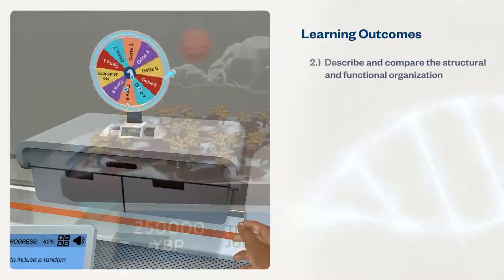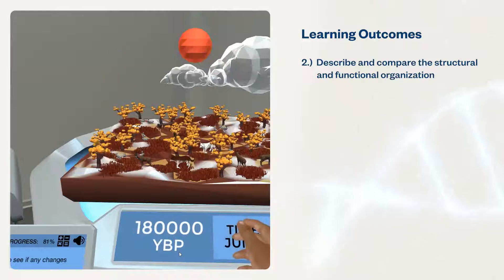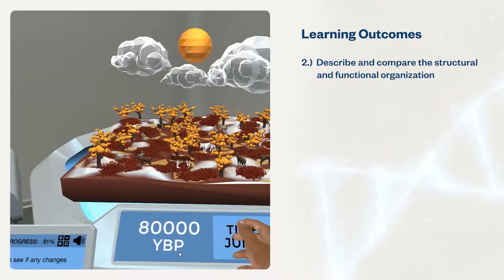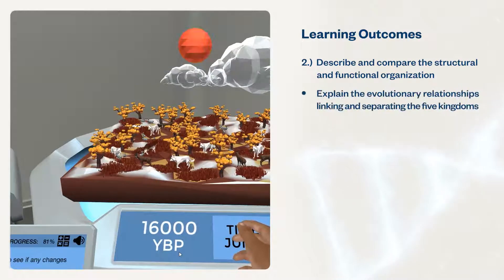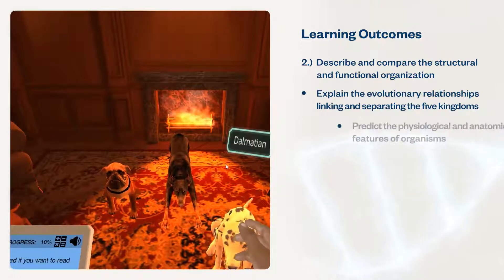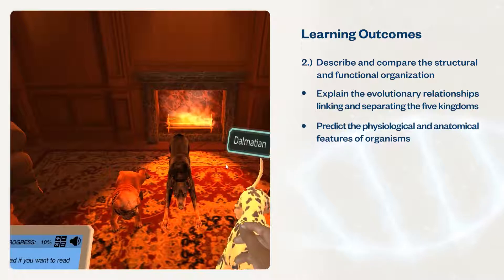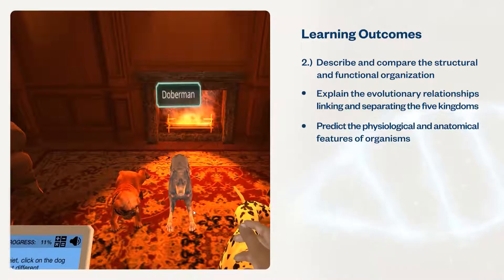Students will describe and compare the structural and functional organization of the major kingdoms of life, explain the evolutionary relationships linking and separating the five kingdoms, and predict the physiological and anatomical features of organisms within a kingdom and group.